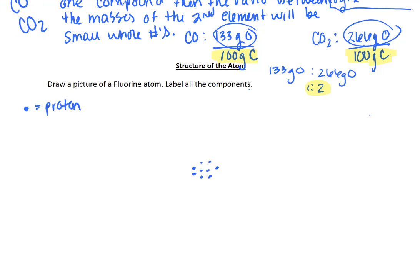I'm going to change colors and draw some neutrons. Generally, it's pretty safe to say that if you have nine protons, you're going to have an isotope that has nine neutrons. So let's draw in nine neutrons. So nine neutrons.